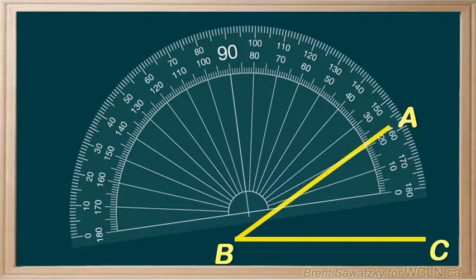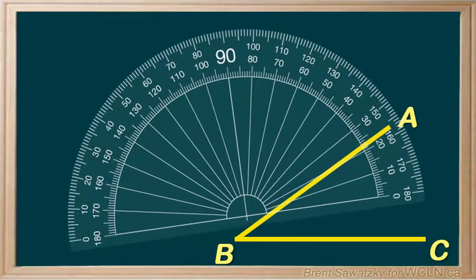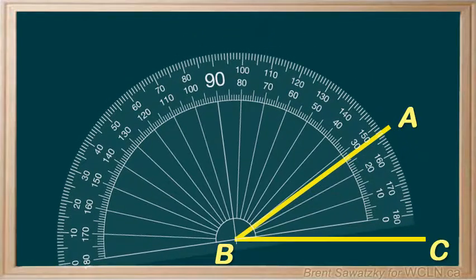To use a protractor, you need to first align the midpoint of the protractor with the vertex of the angle, like this.